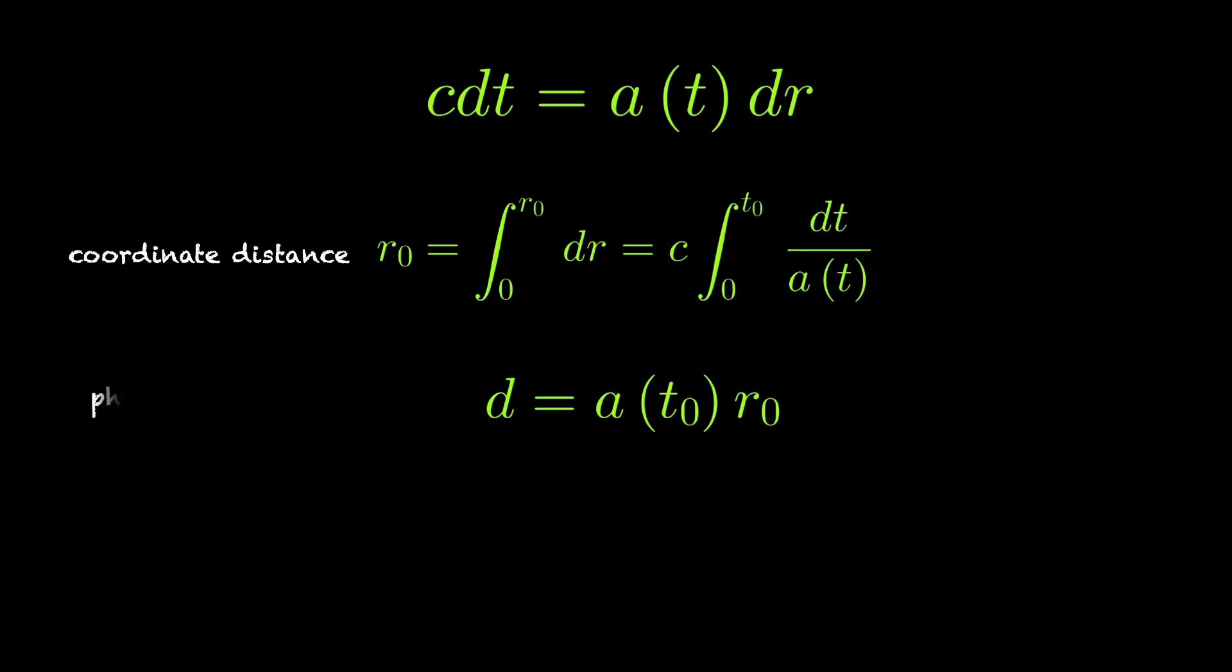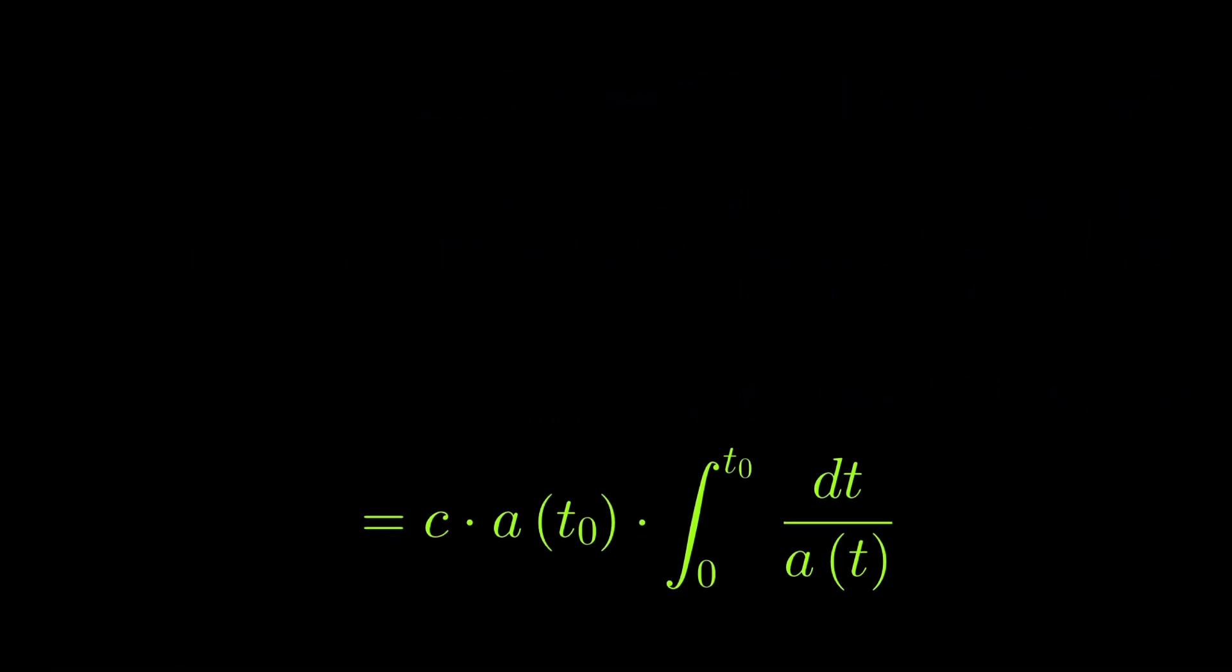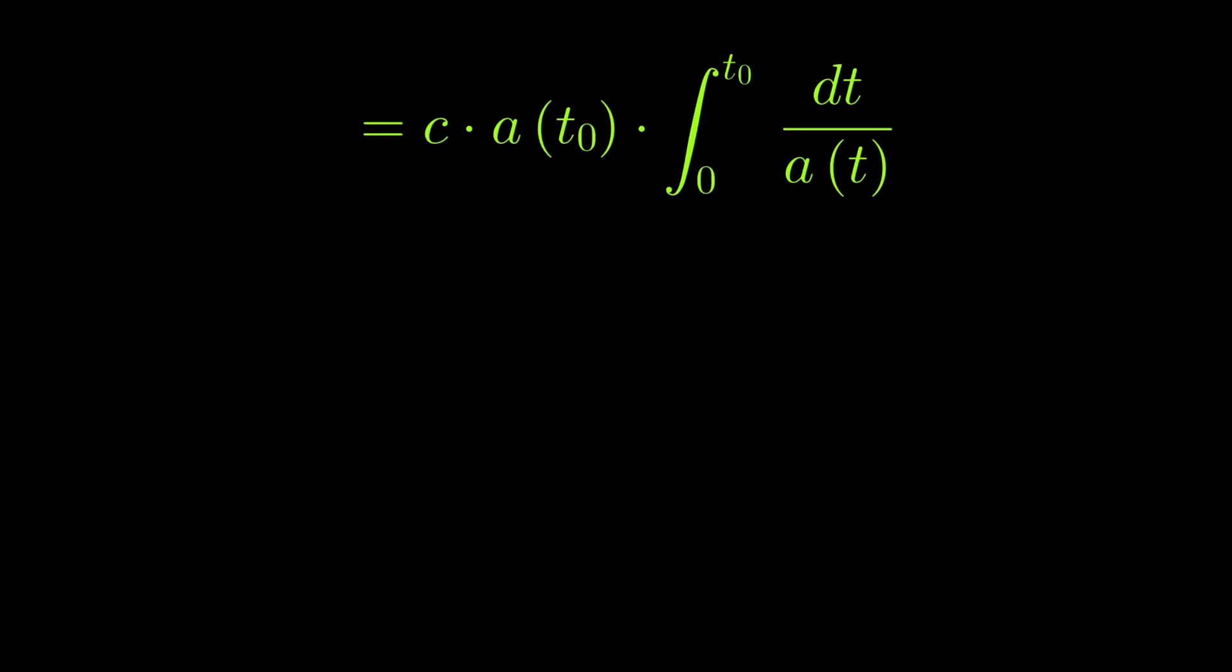And this is the physical distance. So, this means that the real physical distance is c times a(t₀) times the integral from 0 to t₀ over dt divided by a(t). So, now, what we do is, in order to solve the integral, we have to plug in something for a(t). And now, remember that we stated that the universe is matter-dominated and, therefore, we know that the scale factor is proportional to t to the power of 2/3. And we just plug that in without any constants because we're just interested in estimations. So, what we get, then, if we also plug in a for t₀, then we have the speed of light c times t₀ to the power of 2/3 and then the integral from 0 to t₀ over the integrand t to the power of minus 2/3.